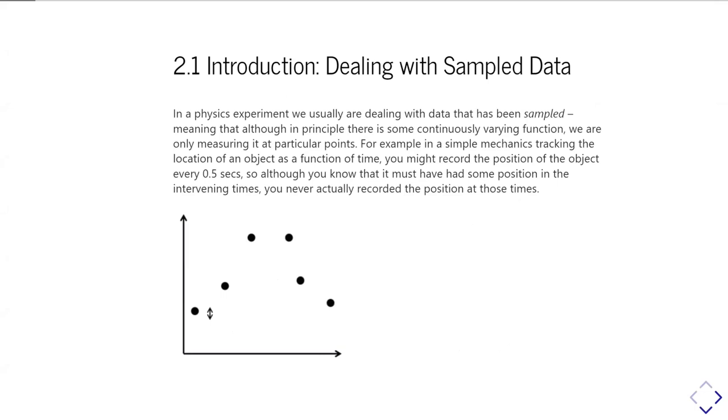What do we mean by sample data? In a physics experiment, we're usually dealing with data that we have measured at particular intervals. We've sampled our data, meaning that although we might know that, in principle, whatever we're measuring can be represented with a continuous function, or at least continuous so long as you're not dealing with quantum mechanical effects.